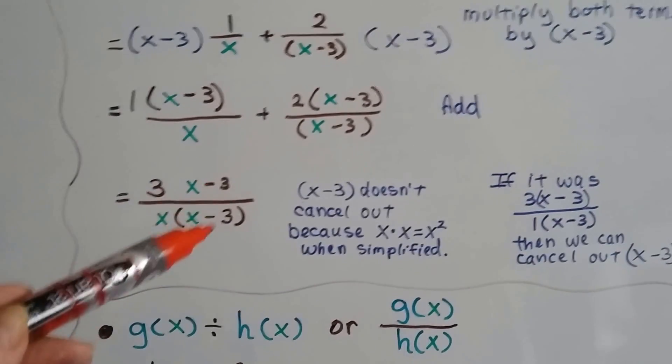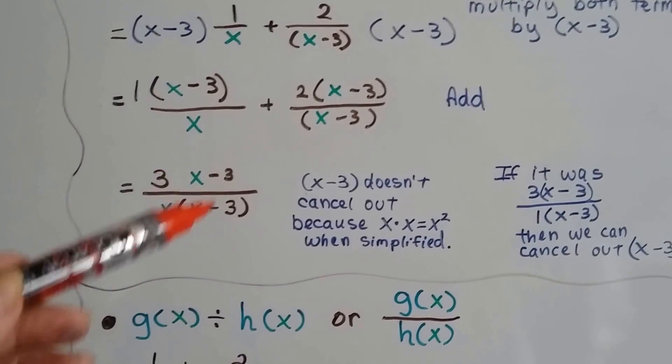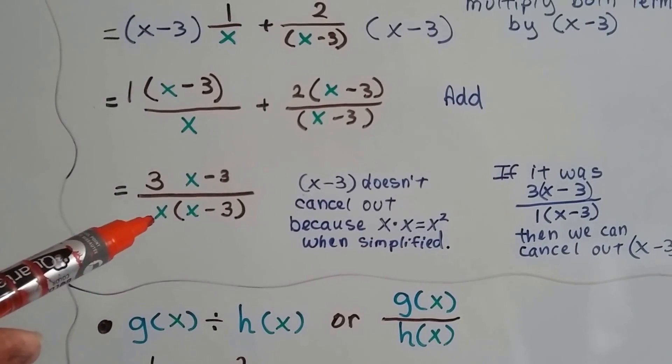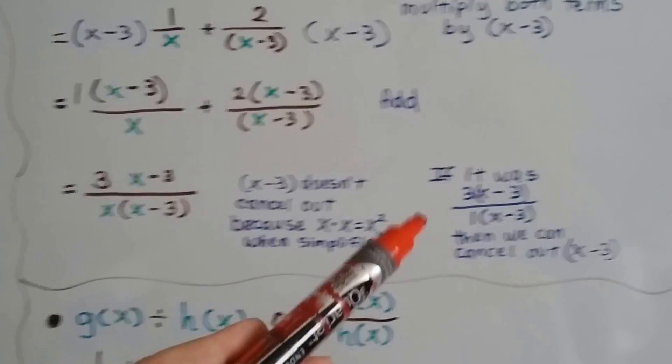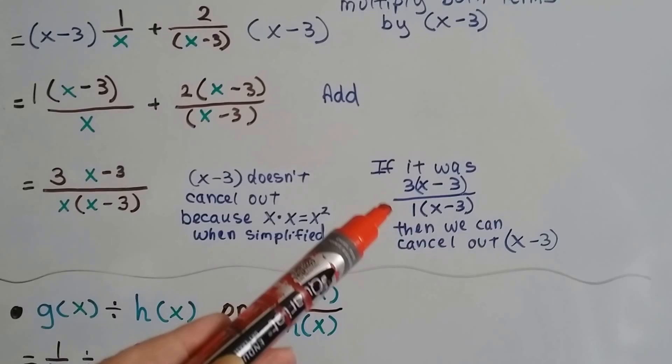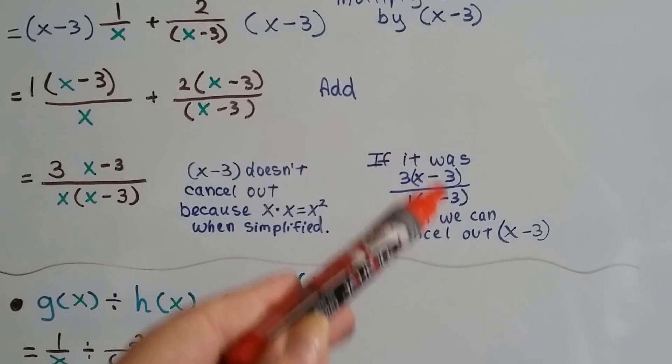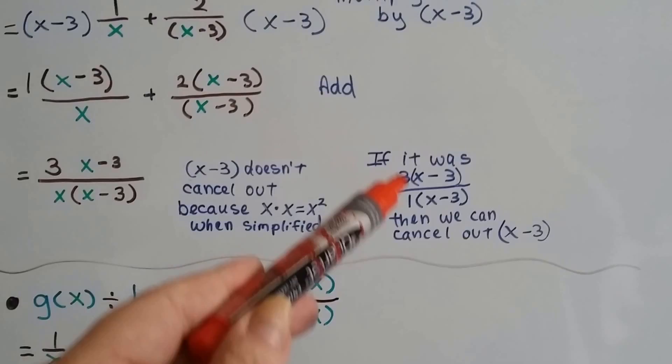And this x minus 3 over this x minus 3 doesn't cancel out, because if we did the distributive property, we'd get x squared when we simplify it. If it was like a 3x minus 3 over 1x minus 3, or 2x minus 3 or something like that, we could cancel them out and then we'd have this as a fraction.